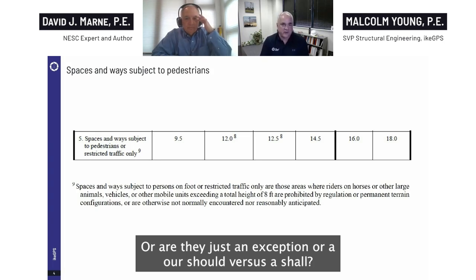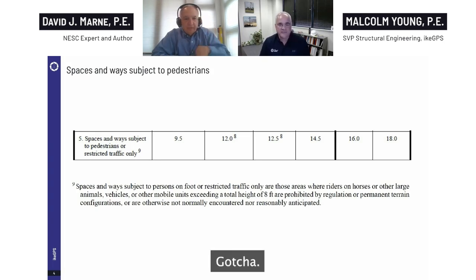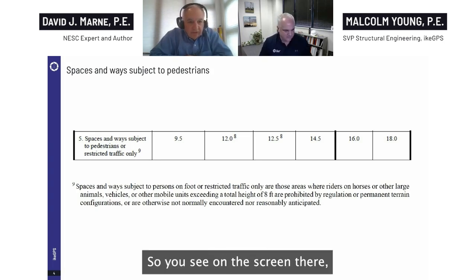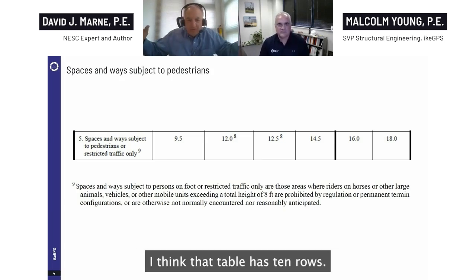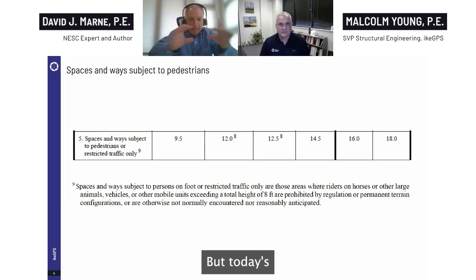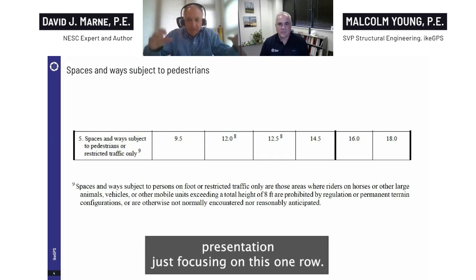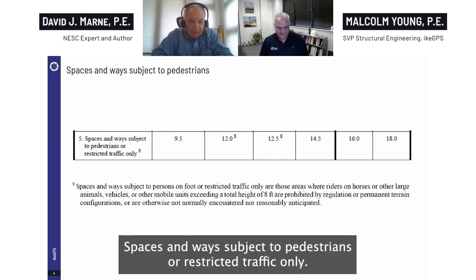You see on the screen there just one row out of that big table — I think that table has 10 rows — but today's presentation is just focusing on this one row: spaces and ways subject to pedestrians or restricted traffic only.